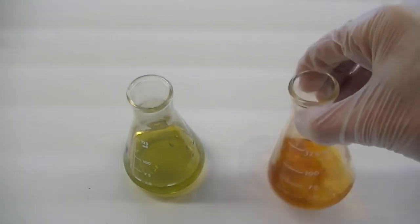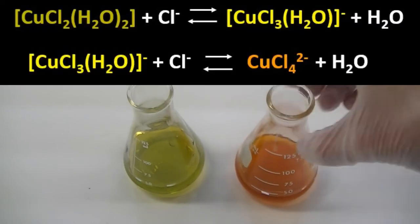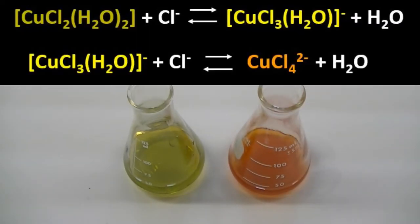Notice the shift to an orange color. This color change can be explained by noting that in the presence of very high concentrations of chloride ion, the yellow-green dichloro-copper species reacts to form a yellow trichloro-copper species.